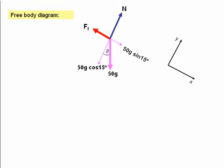We're now ready to write down our equations of motion. We can write an equation of motion in the x direction first. The resultant force in the x direction, taking the positive direction as down the slope, is 50g sin 15 minus the frictional force F subscript F.